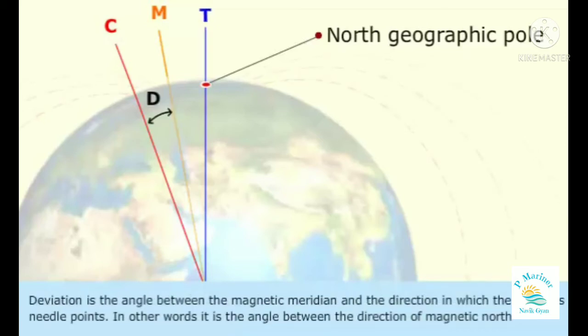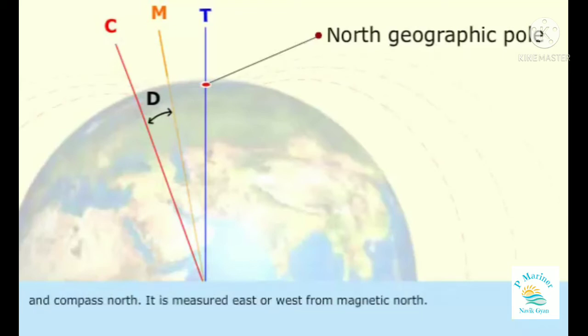Deviation is the angle between the magnetic meridian and the direction in which the compass needle points. In other words, it is the angle between the directions of magnetic north and compass north. It is measured east or west from magnetic north.